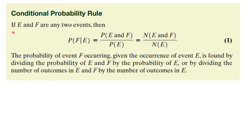So the probability of event F occurring given the occurrence of event E is found by dividing the probability of E and F by the probability of E, or by dividing the number of outcomes in E and F by the number of outcomes in E.